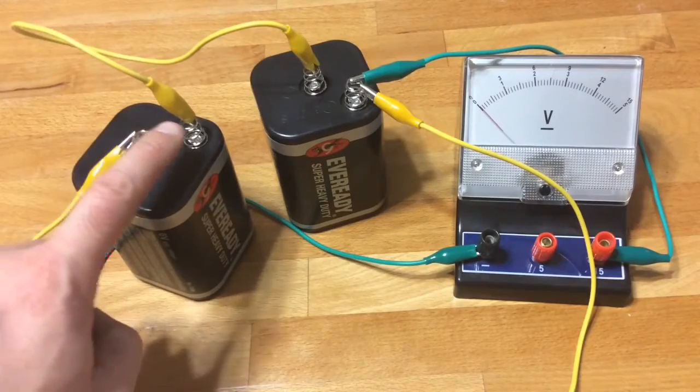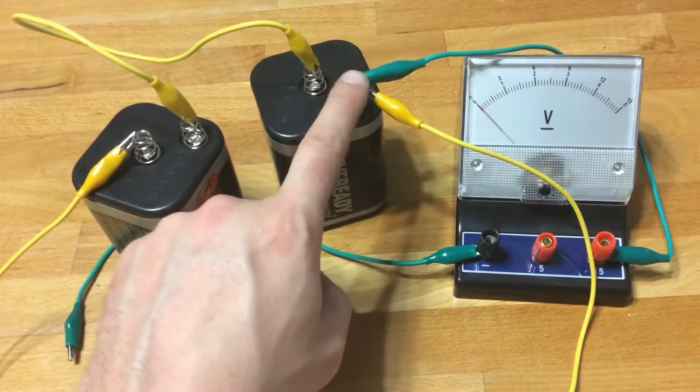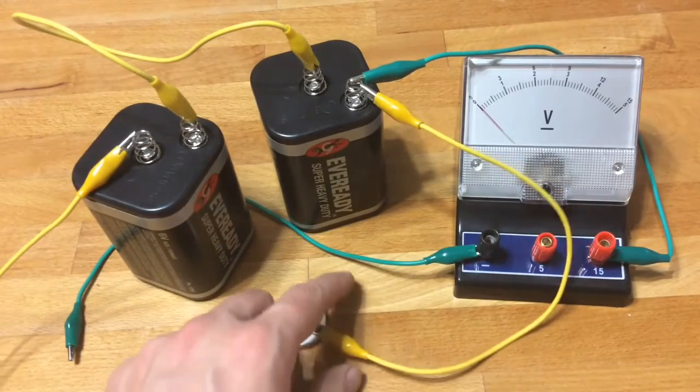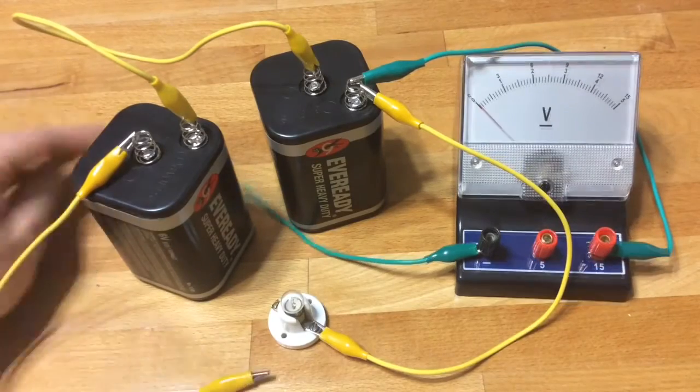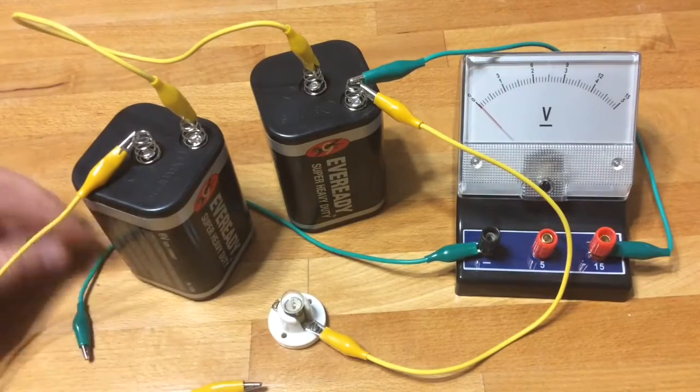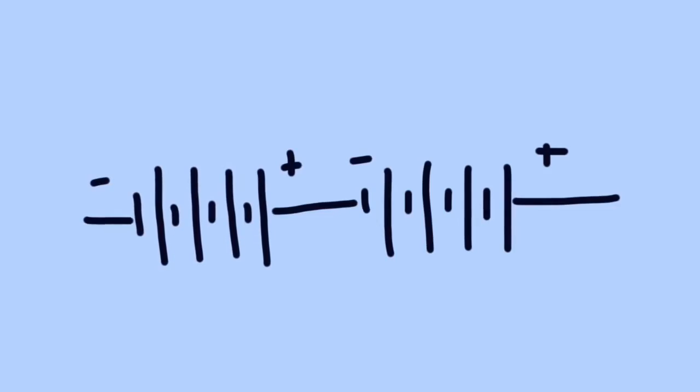Now let's do a series connection. Positive to negative. Wrap it around in a circle. What's this voltage going to be? 0, 6, or 12. Here's a diagram to help you out.